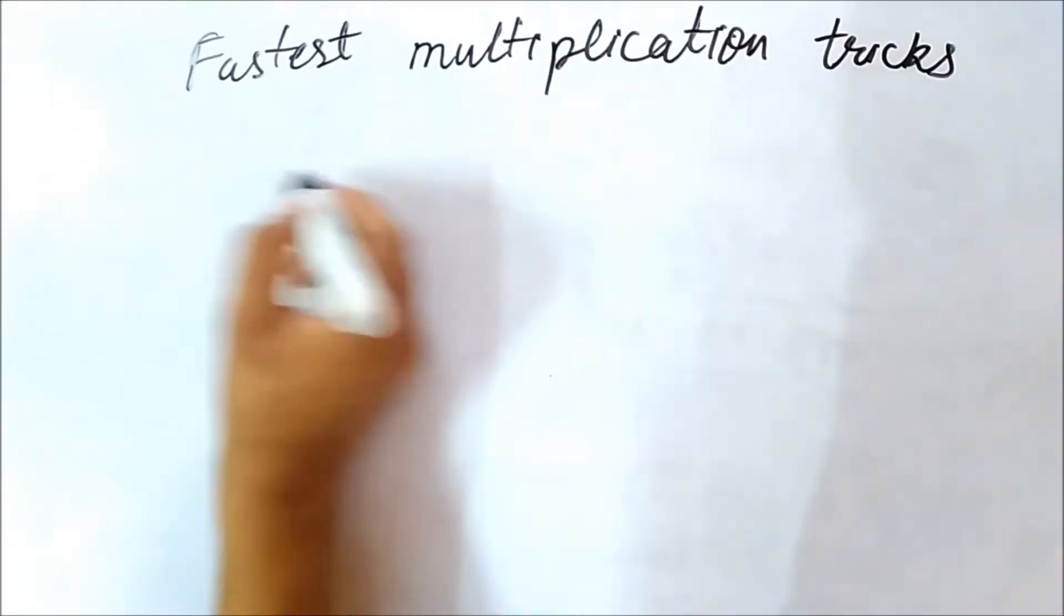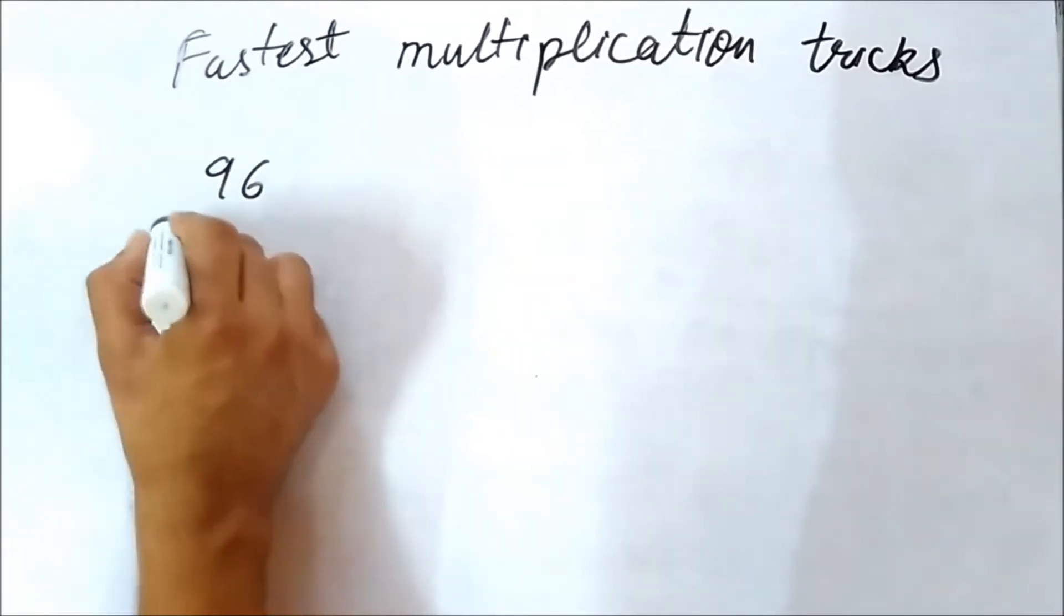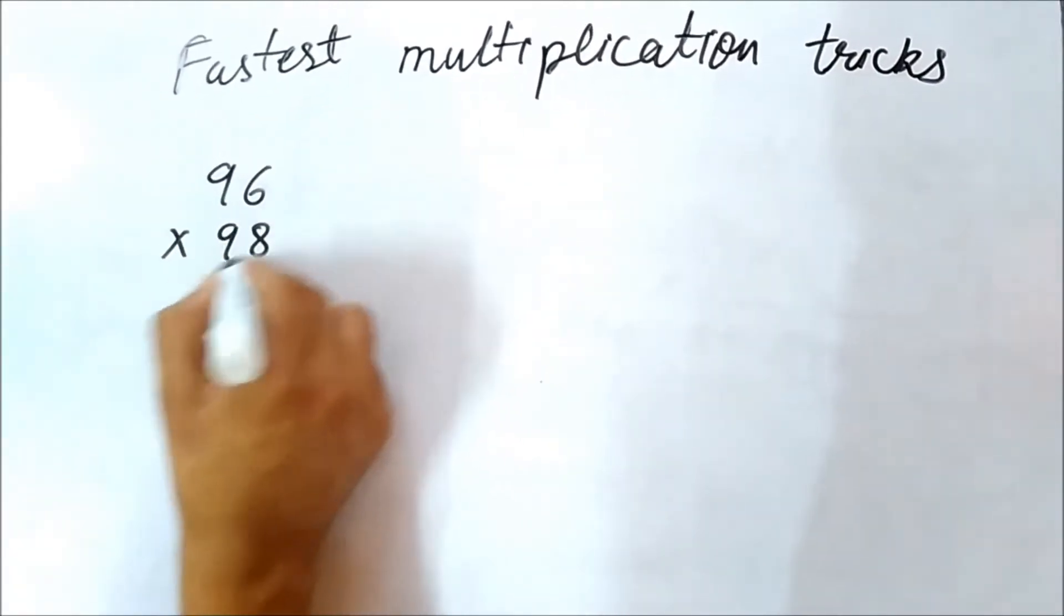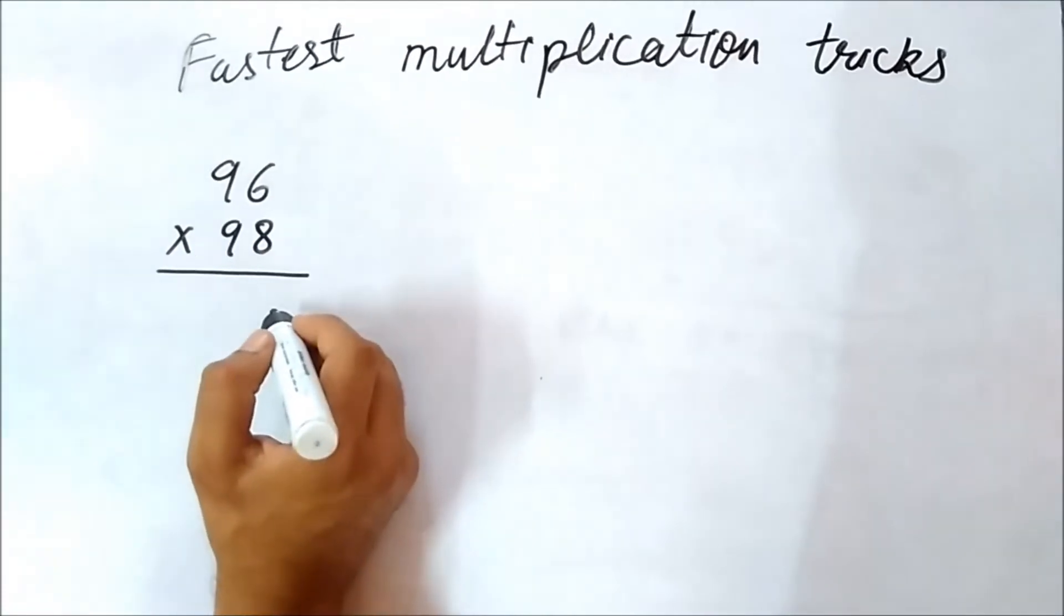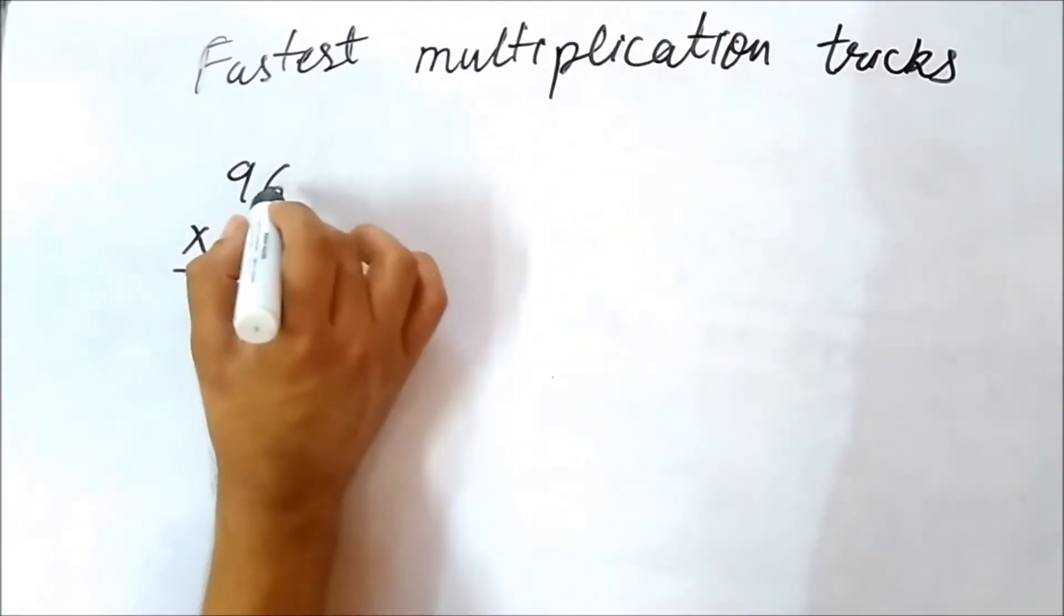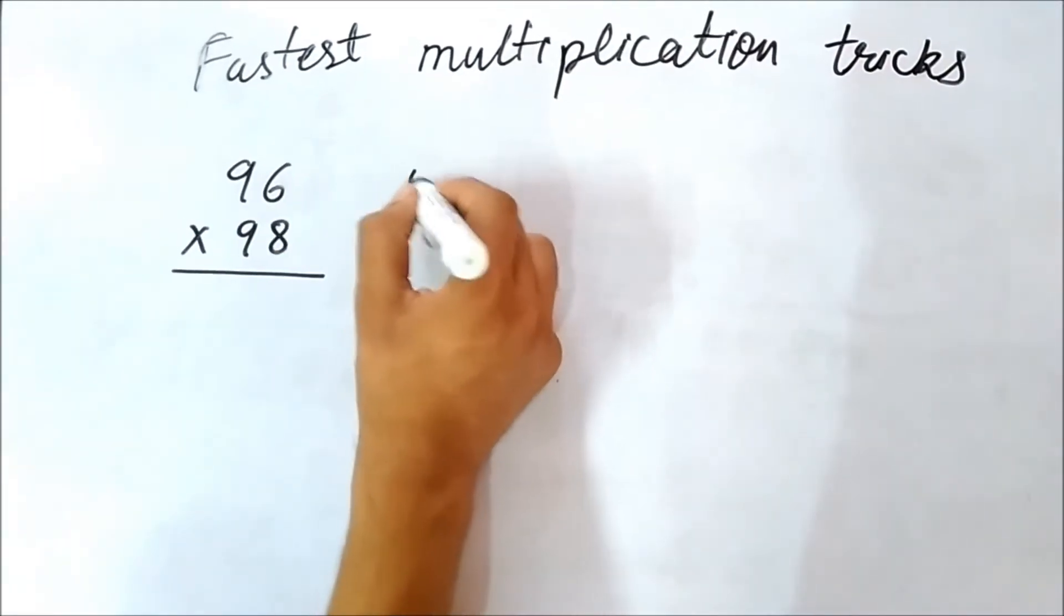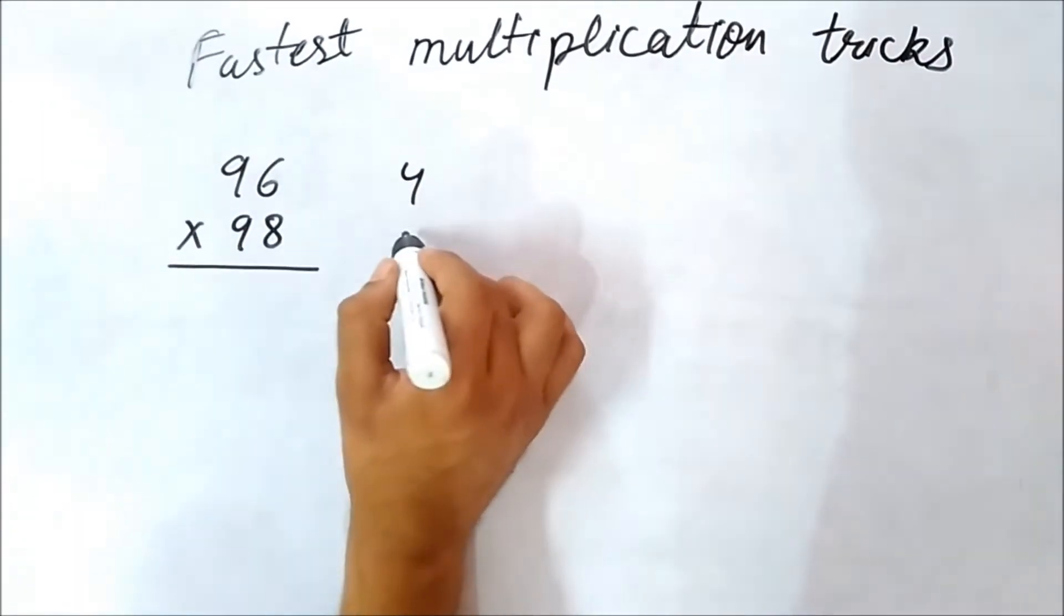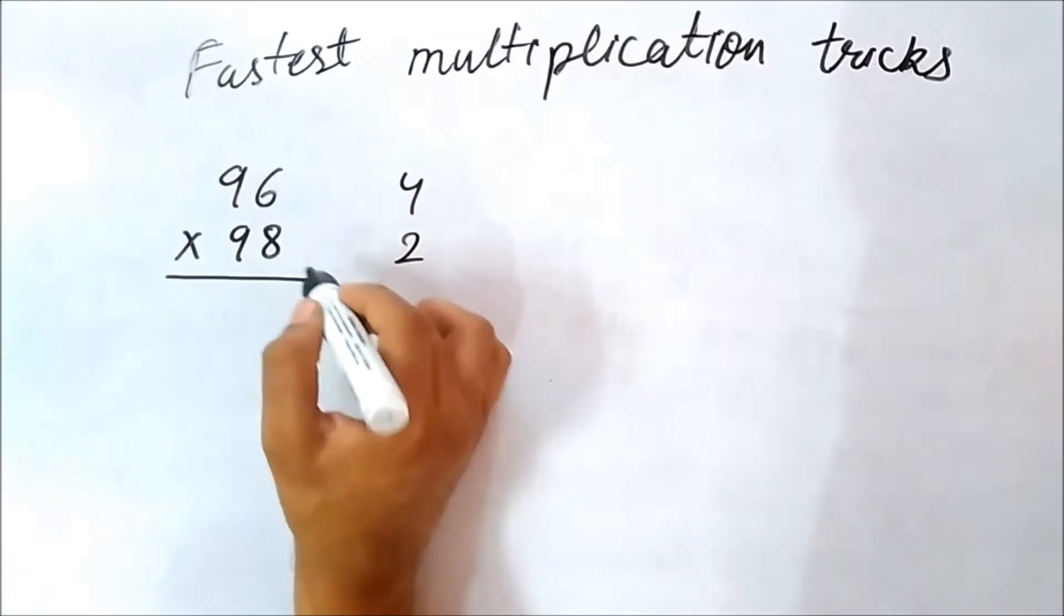So let's do it. Let us take two numbers like 96 and multiply it by 98. So we have to get the answer without actually multiplying. So what to do? Just check how much less 96 is from 100, it is 4. And 98 is less by 2 from 100. So we have to check how much they are less from 100.